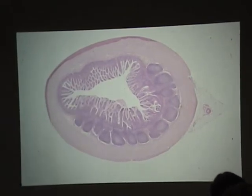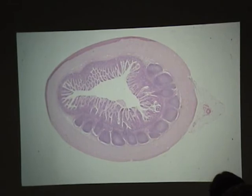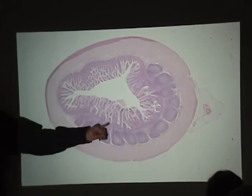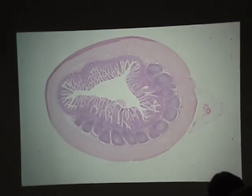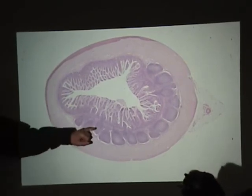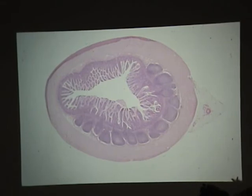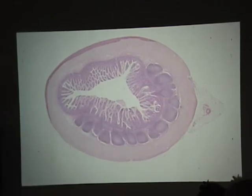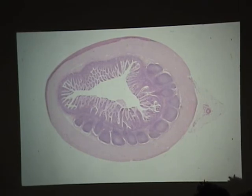Before we talk about Peyer's patches, let's do the organization of the gut wall, starting from the lumen. The mucosa consists of the epithelium — columnar, with goblet cells. The connective tissue core of the villus is called the lamina propria, and it's an example of loose connective tissue. There's a thin layer here — a couple of smooth muscle cells thick — called the muscularis mucosa. So the mucosa consists of the epithelium, the lamina propria, and the muscularis mucosa.